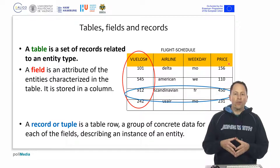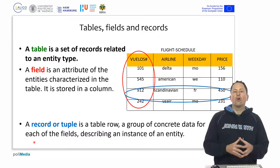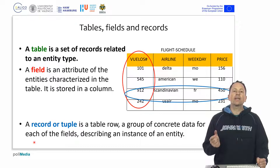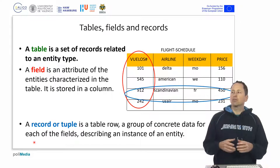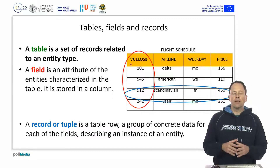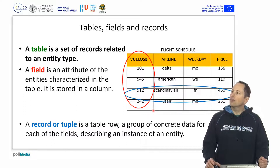We also need to specify what kind of data will be stored in it — whether it is alphanumeric data, just numbers, and whether those numbers are going to be integers or real numbers with decimals. Depending on what we are going to store, the data occupies more or less space in the database. If we are going to use the flight number, which is always an integer, it is worth defining it as an integer and not storing it as text or as a real number, because that takes up more space.